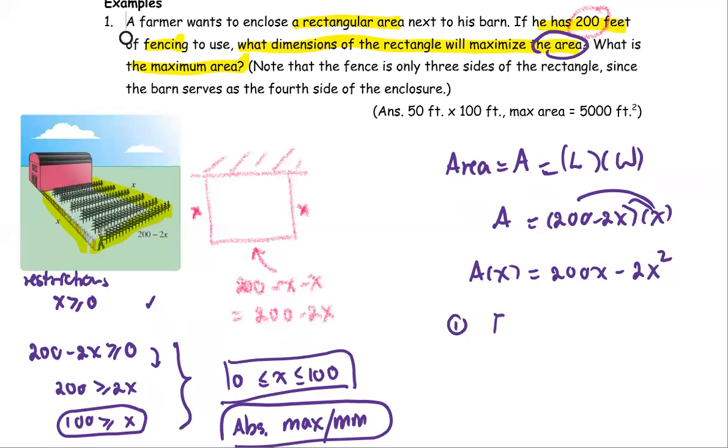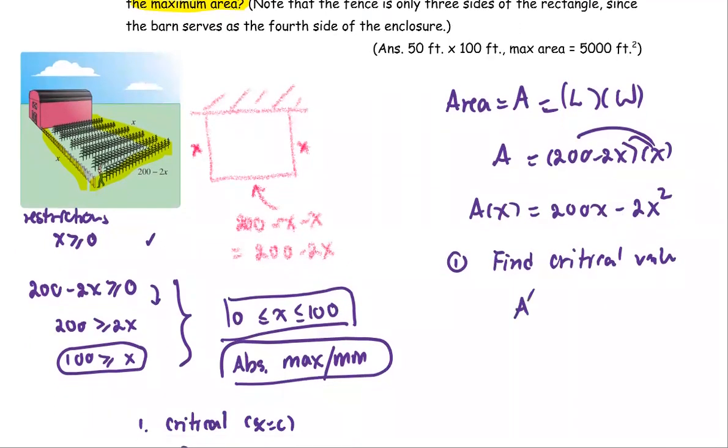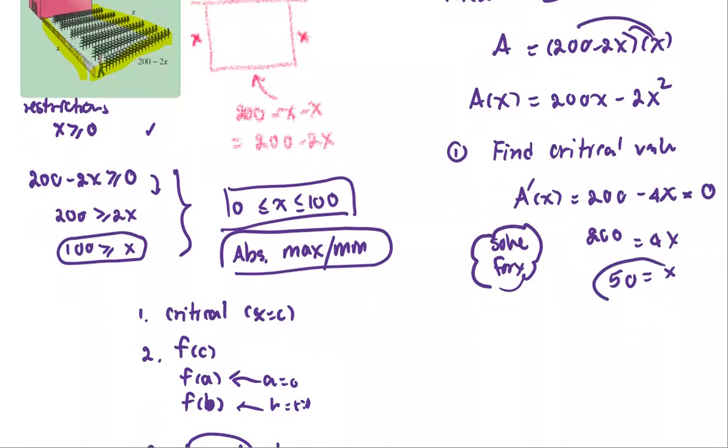The first step, we're going to find a critical value by using the derivative of the area, or A prime. The derivative of the area, A'(x) equals 200 minus 4X. This is a polynomial function. The case that the critical value can be computed when A prime is zero. So we set it to be zero. Then we solve for X. Then 200 equals 4X, or X equals 50. So we get the X value as a critical value.